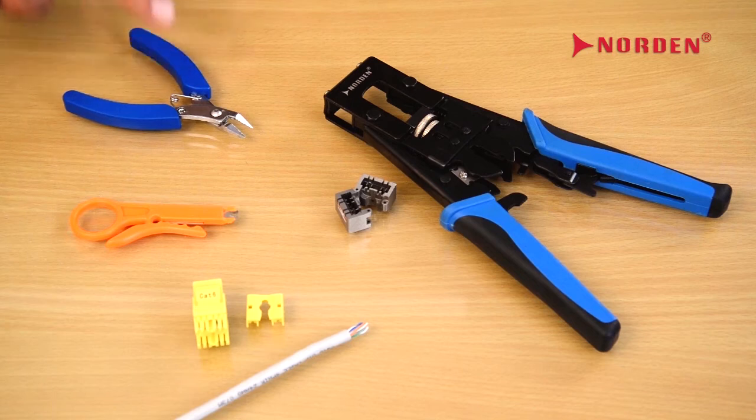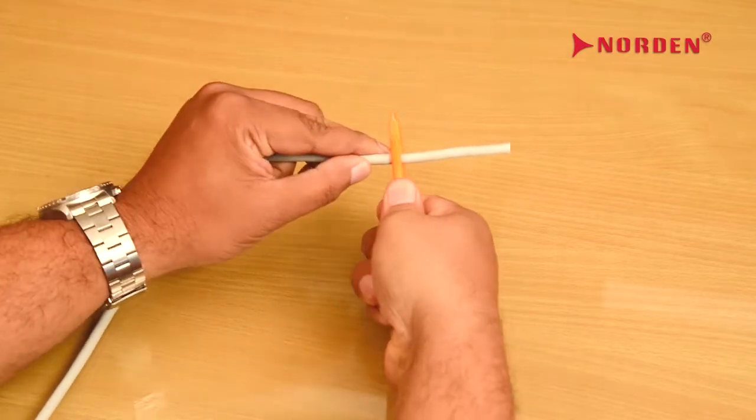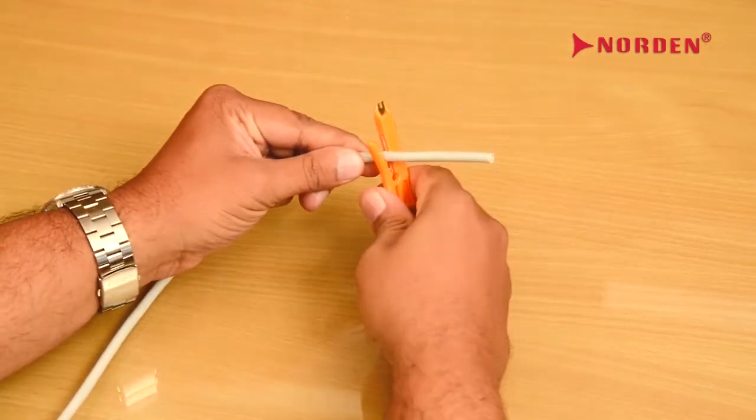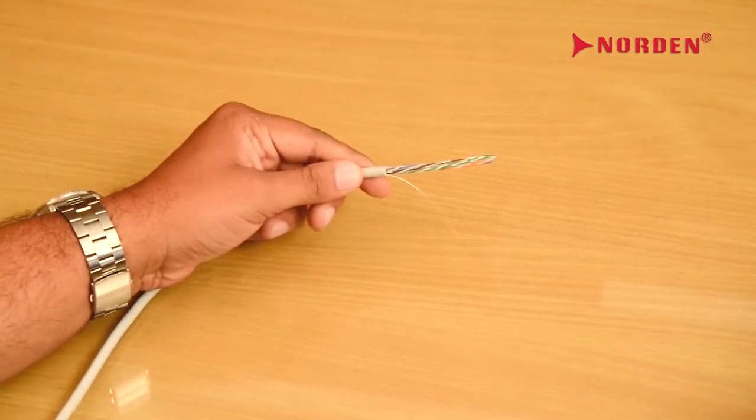Now let's get started. Take the cable jacket stripper and remove the cable jacket approximately 1.5 inches.